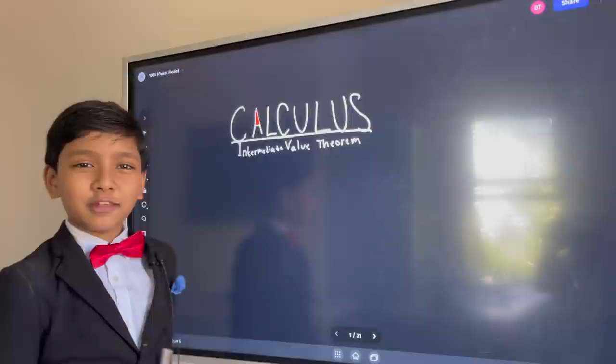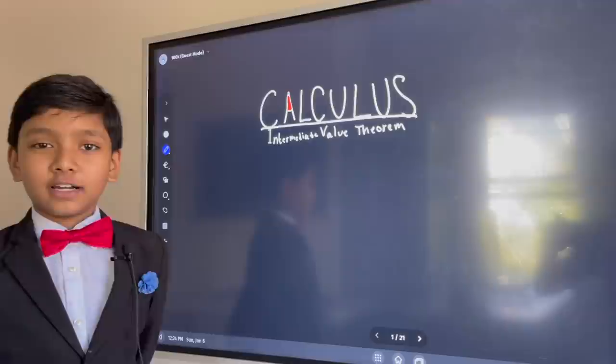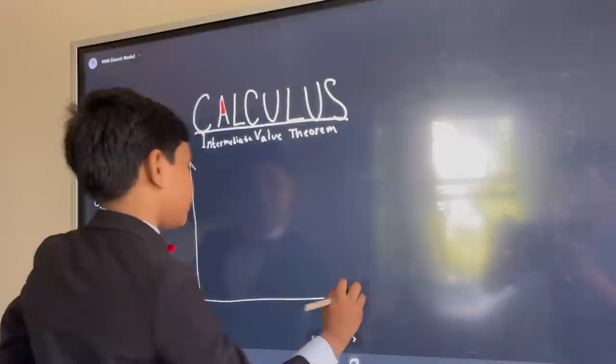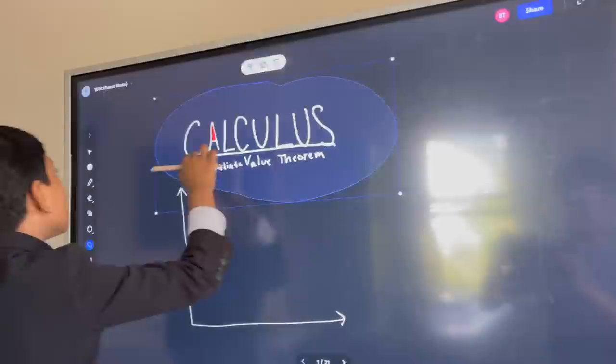What is the intermediate value theorem? To give you normies out there a quick reminder of what it is, unless you're not a normie and you're actually a mathematician just watching this and laughing at me. But, let's say that we have a graph. Oh yeah, I forgot! We have to watermark this.